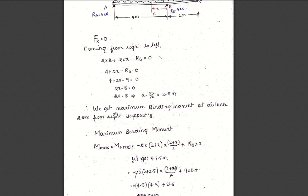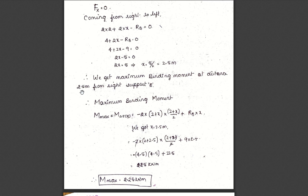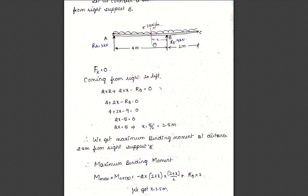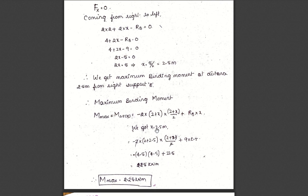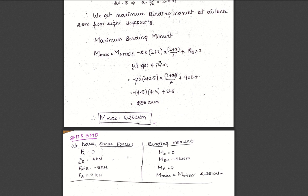Now we calculate the maximum bending moment at x = 2.5 meters from support B. Taking moments from the right: minus 2 kN/m into (2 + x) acting at its centroid (2 + x) by 2, plus Rb into x, substituting x = 2.5. After simplification, the maximum bending moment equals 2.25 kNm.